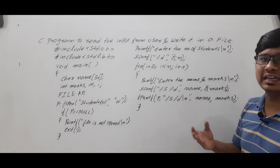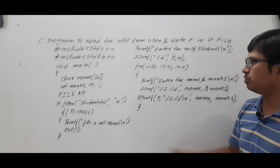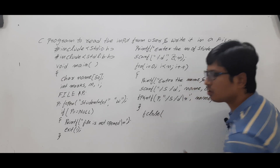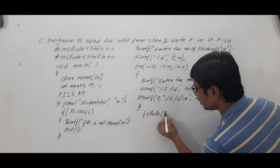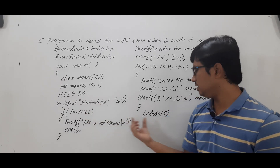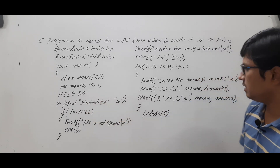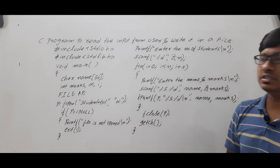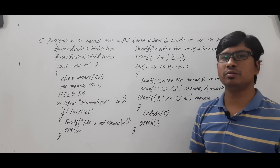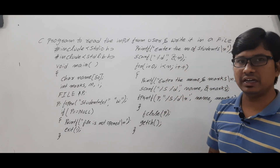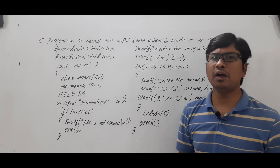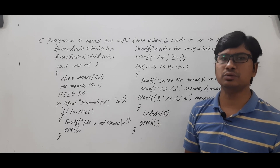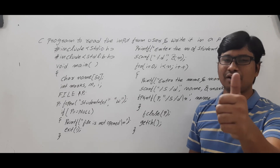Once the loop completes for all n students, it is my duty to close the file using fclose, specifying the file pointer p, which closes student.txt. I then write getch and close the main function. This is the complete program to read information from the user and save it into a file. If you have any doubts feel free to ask in the comments — I will try to clear them as early as possible. Thank you for watching, have a nice day.